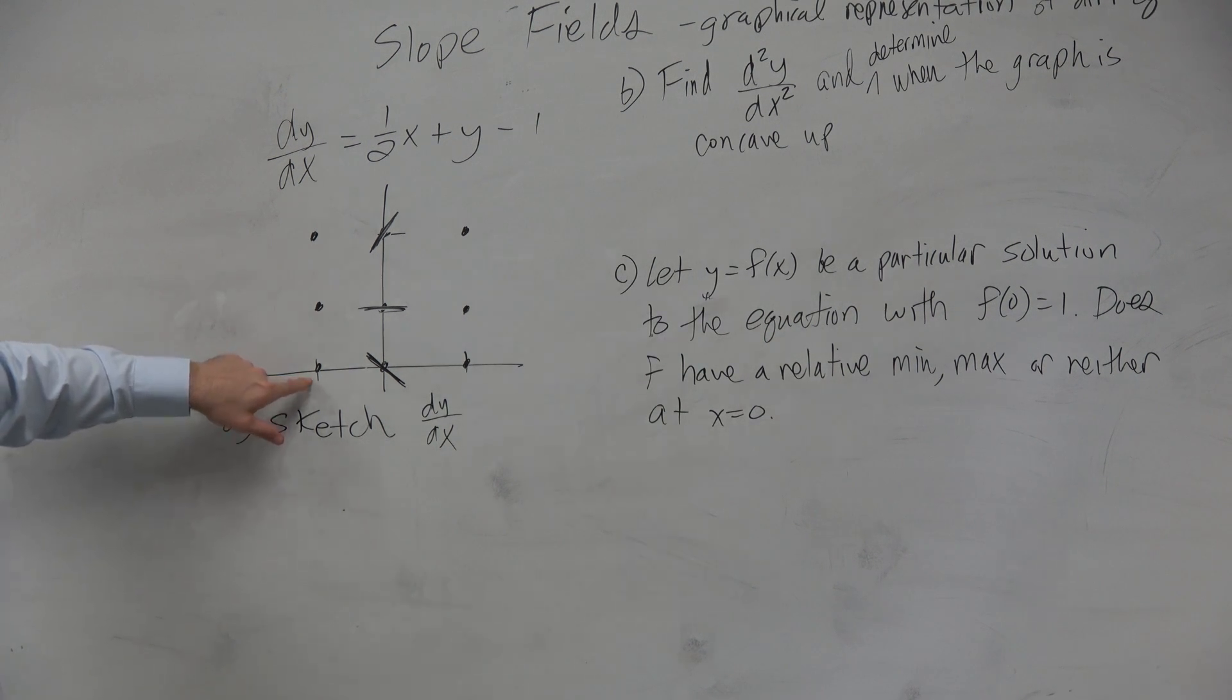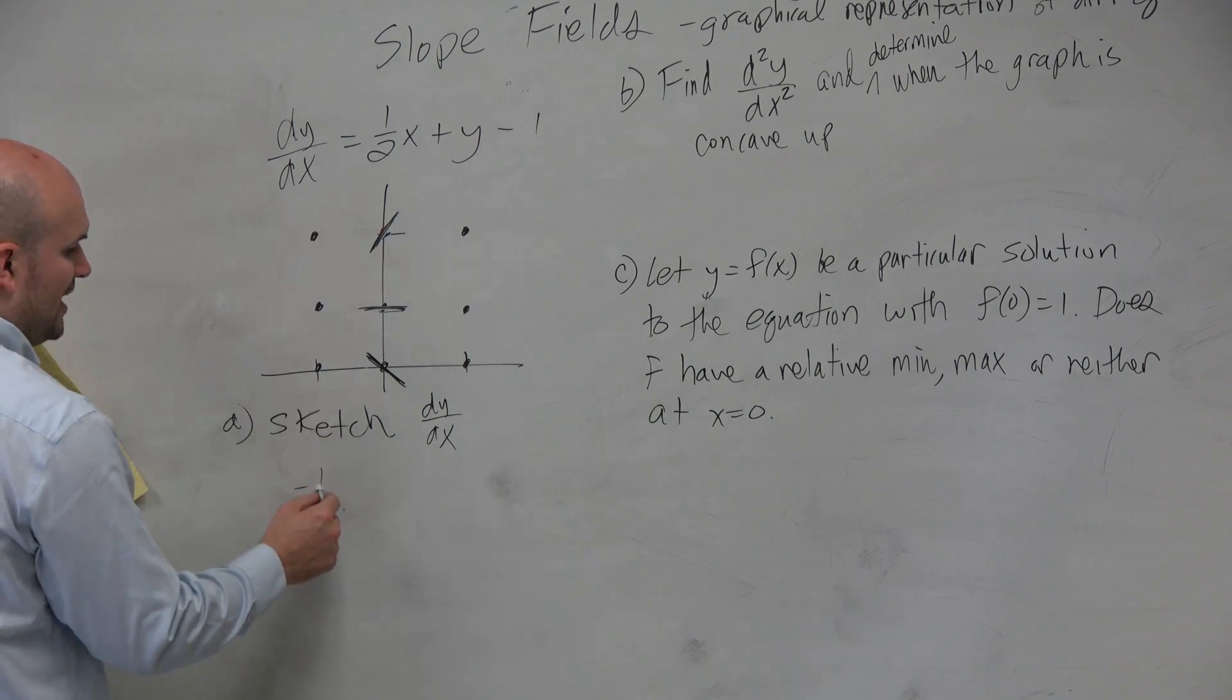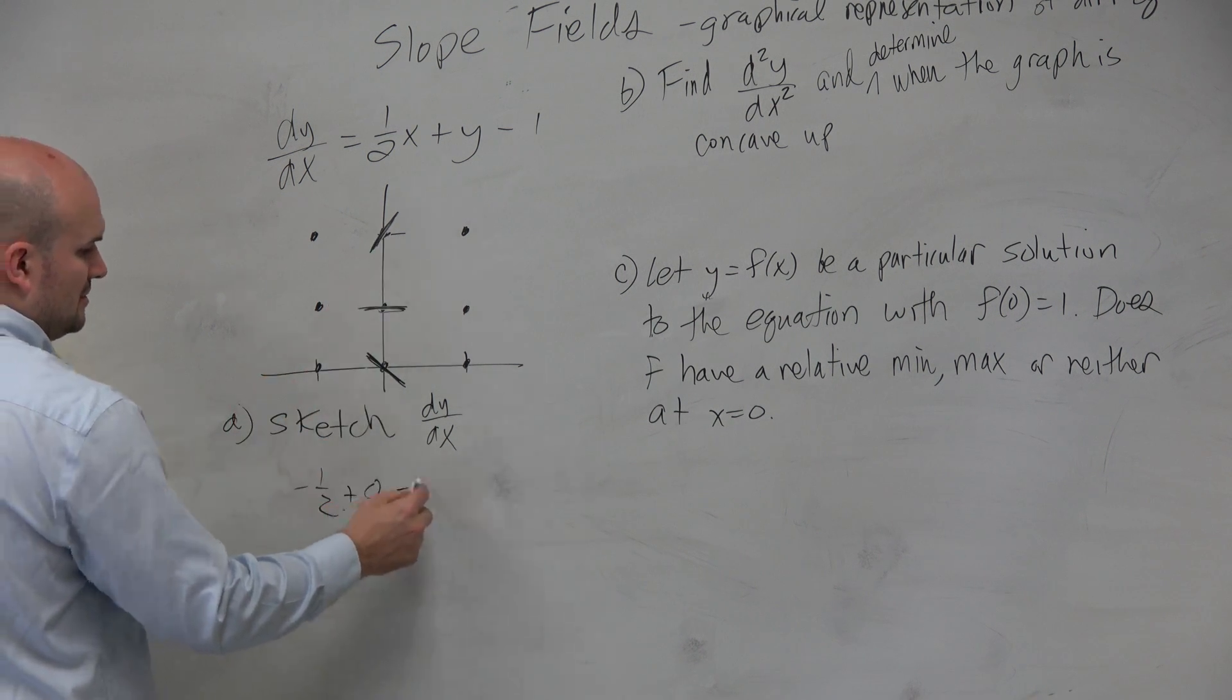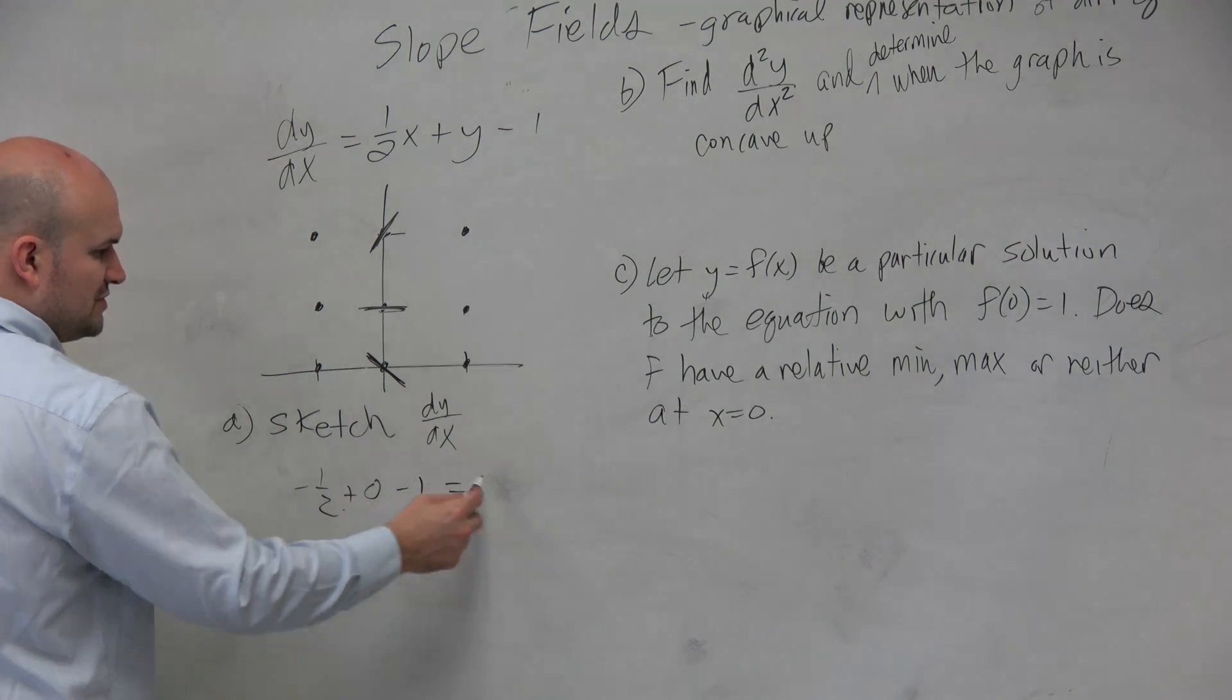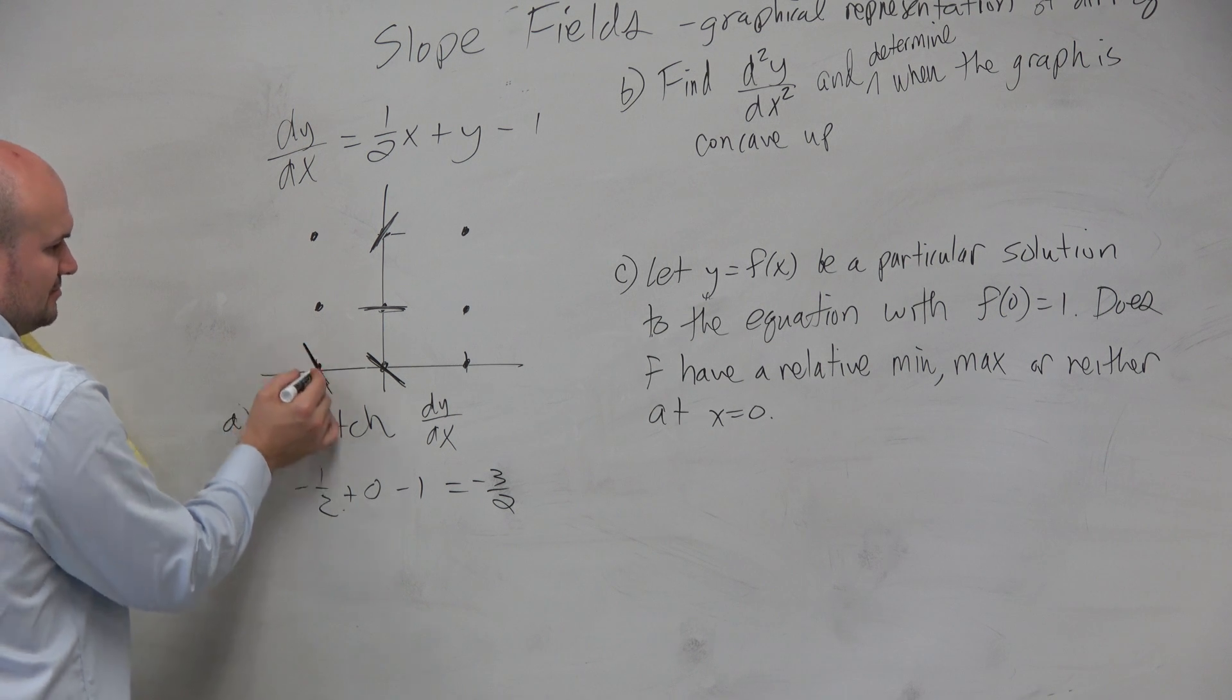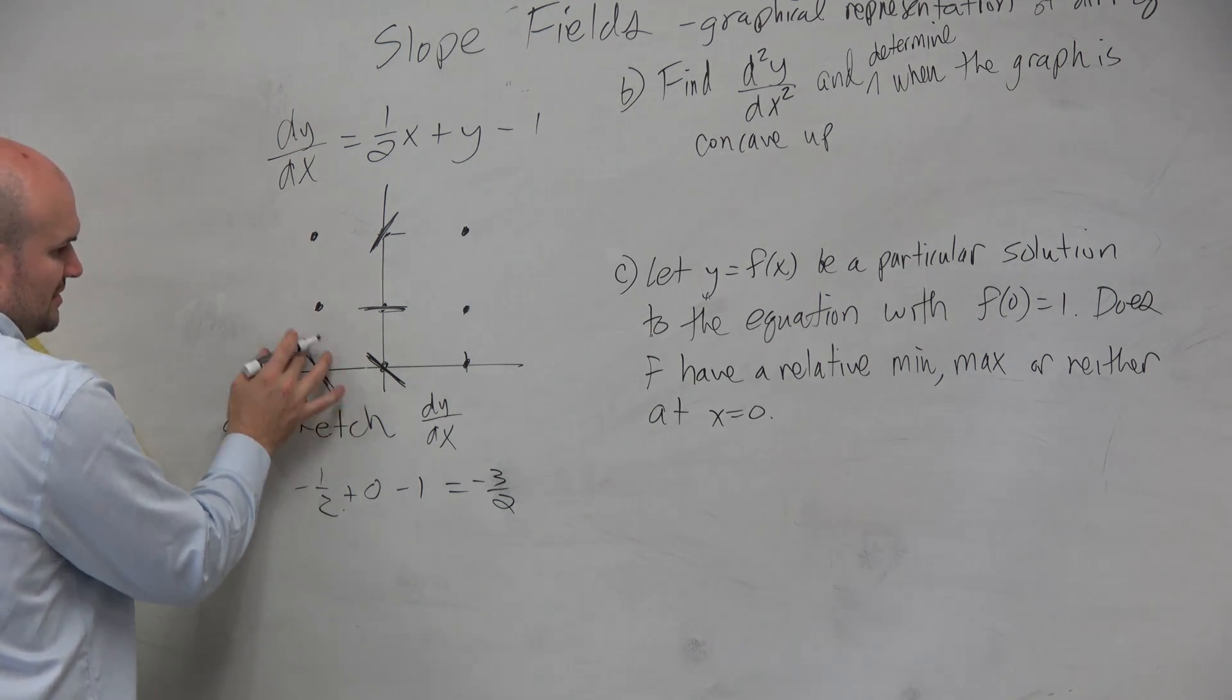So when this is equal to negative 1, so basically that's going to be a negative 1 half. And then we could say plus 0 minus 1. So that's going to be a negative 2 over 2. So that's a negative like 3 halves, which is like 1 half. So it's going to be a little bit steeper. Something right there.